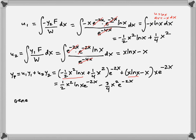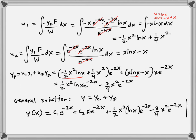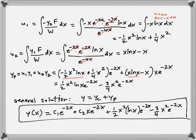So Yp = (1/2)x²·ln(x)·e^(−2x) − (3/4)x²·e^(−2x). The general solution is Y(x) = C1·e^(−2x) + C2·x·e^(−2x) + (1/2)x²·ln(x)·e^(−2x) − (3/4)x²·e^(−2x).